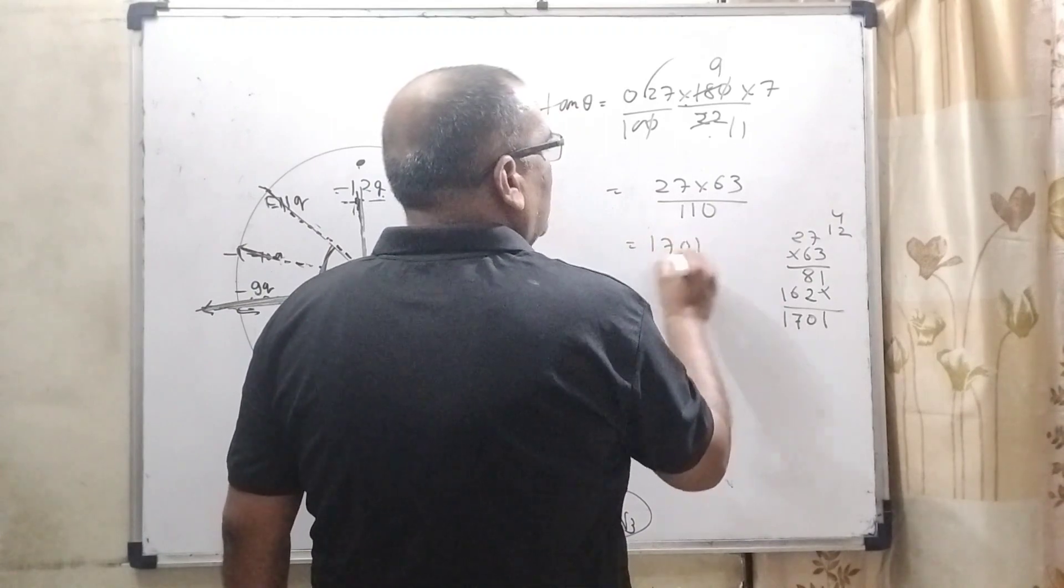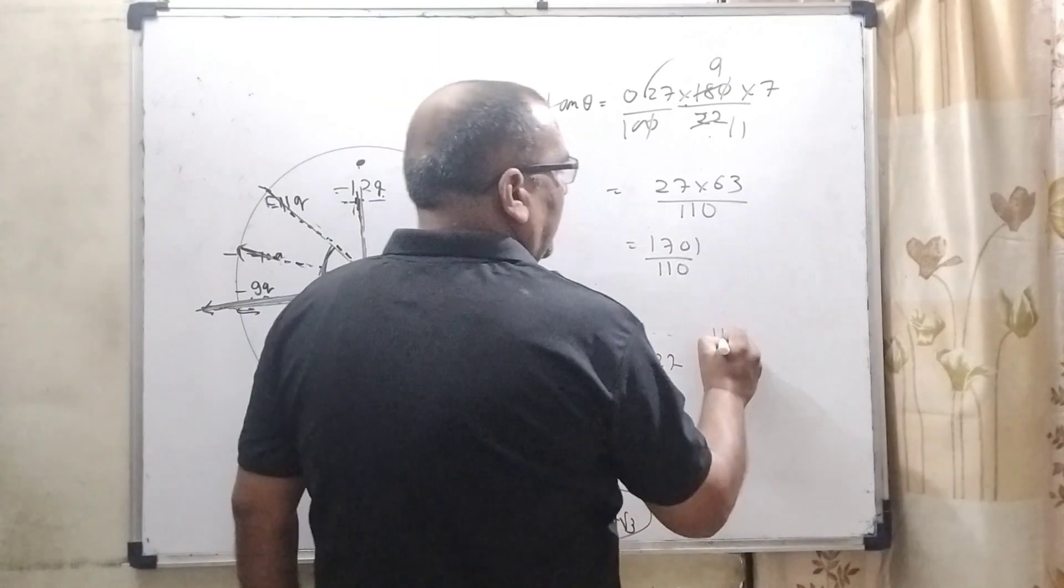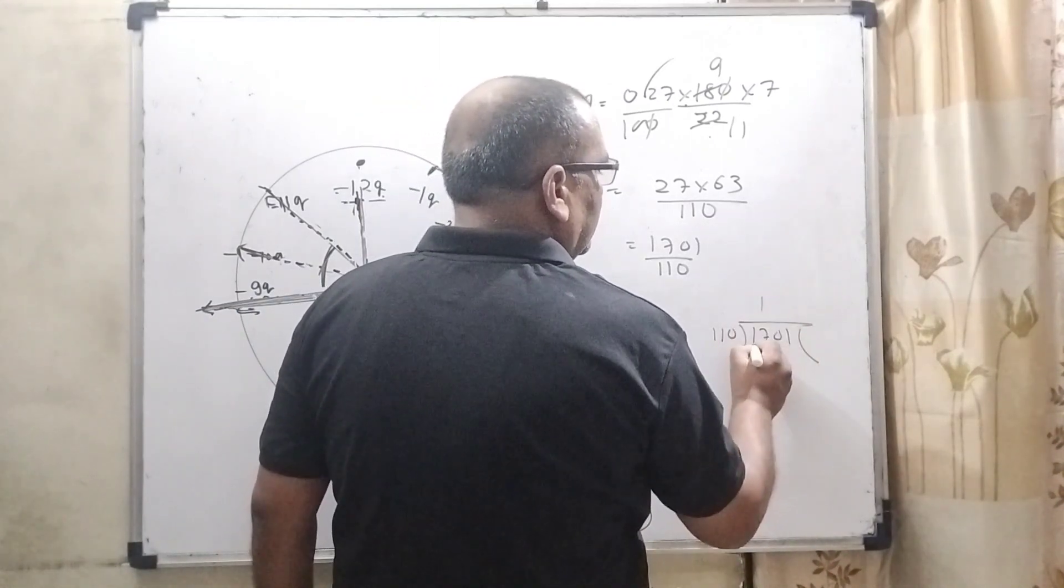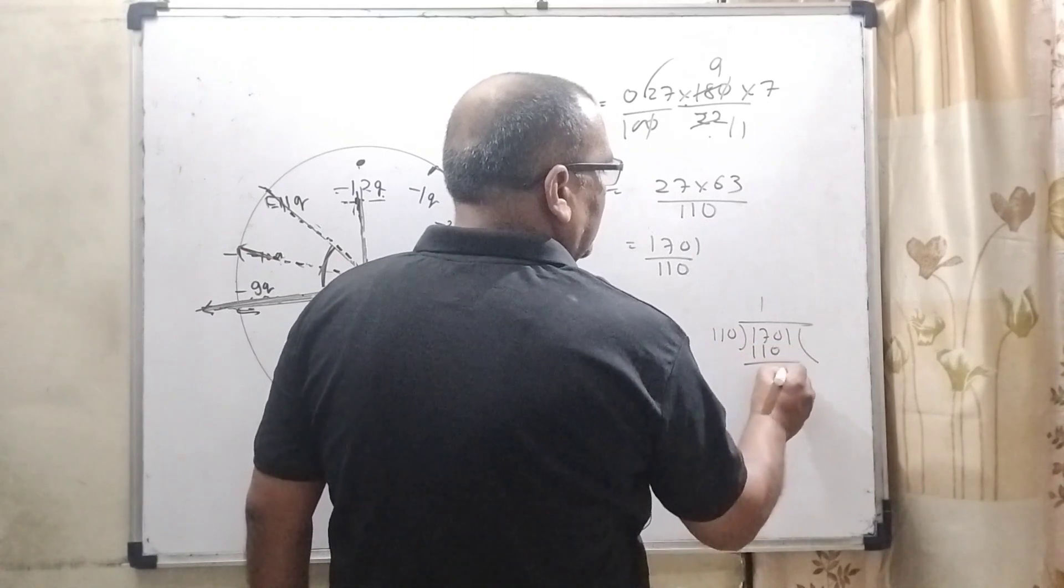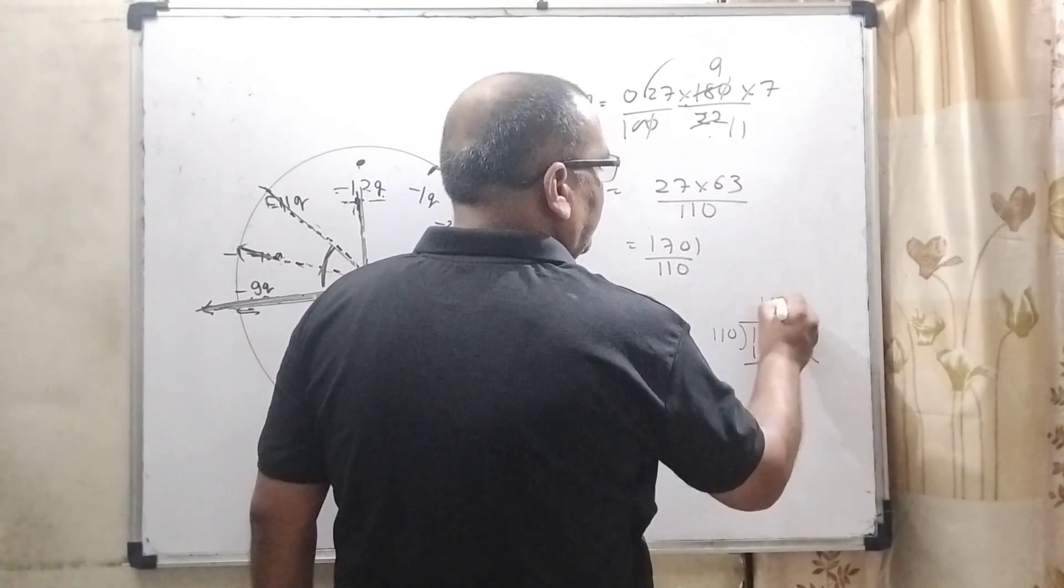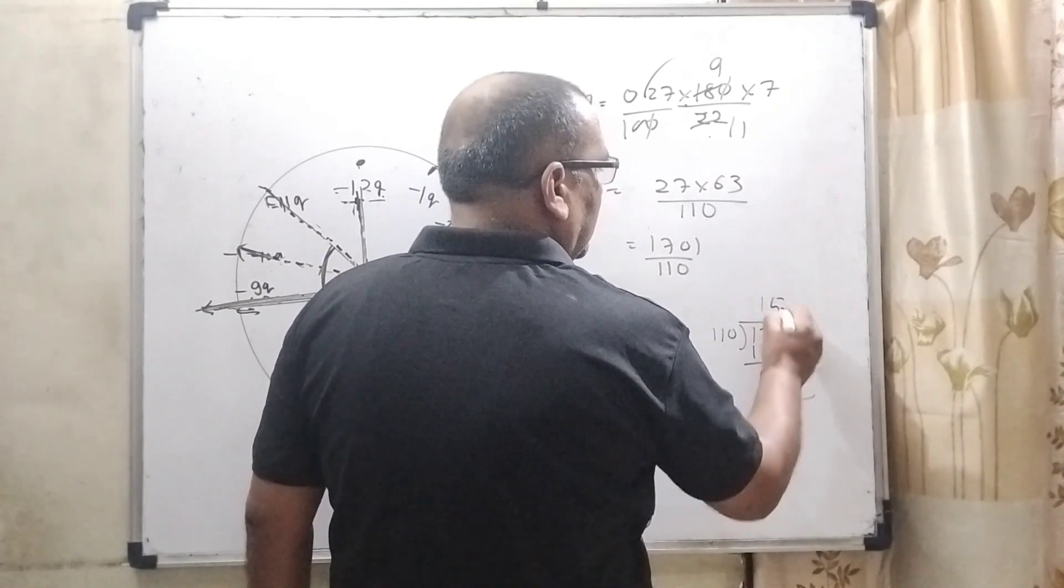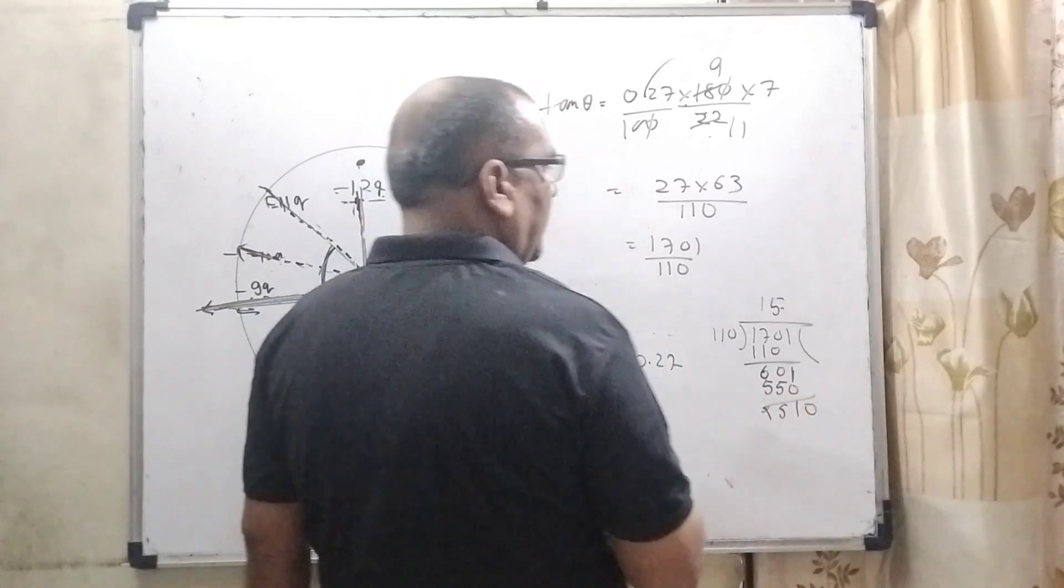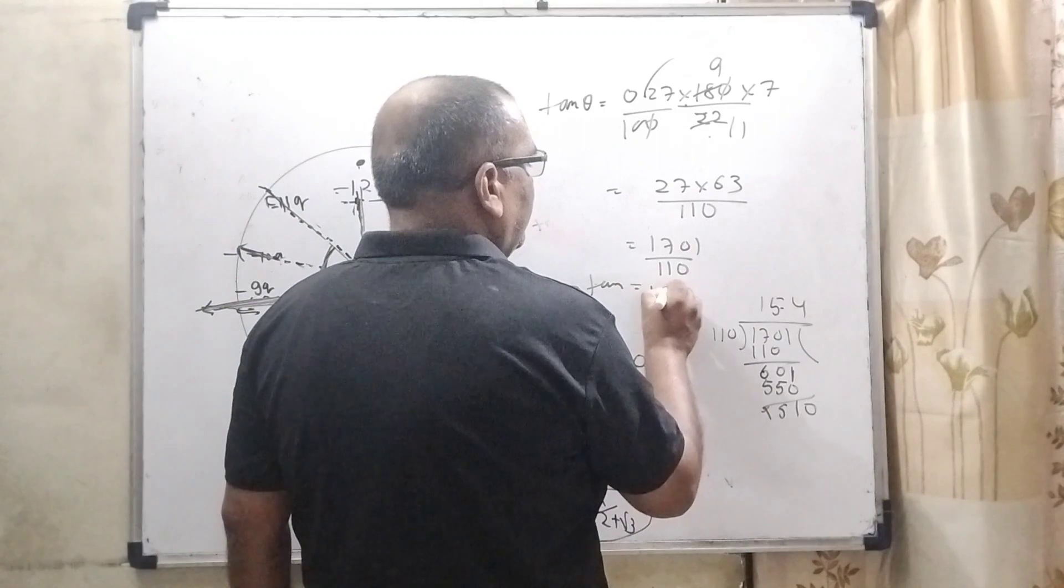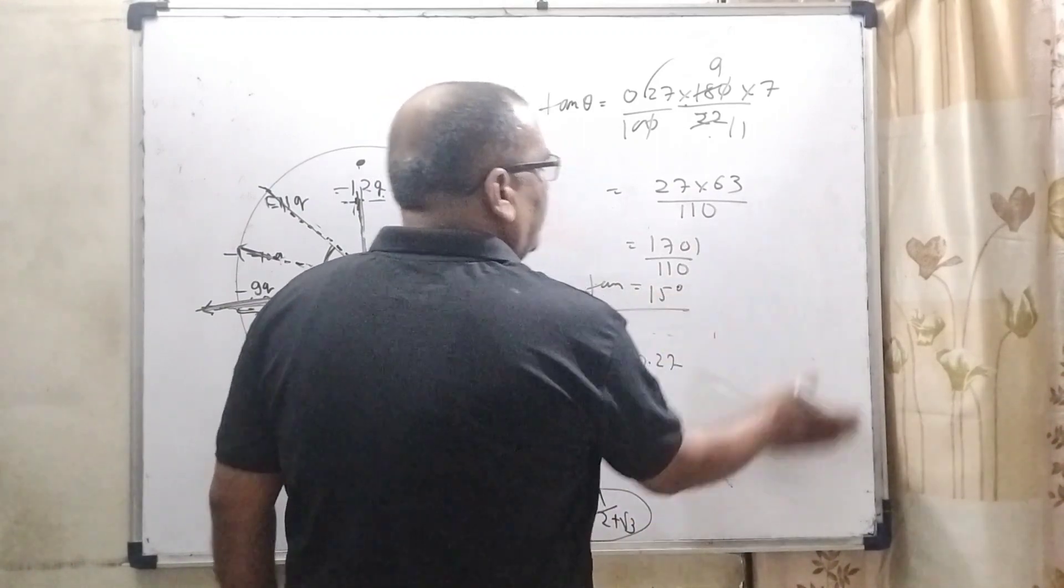And what is the value? It is 5 times decimal is used here again 4 times. Approximately its value is 15 degree. So this value is 15 degree.